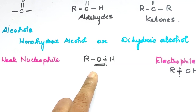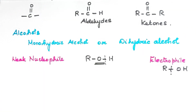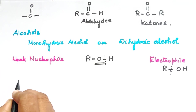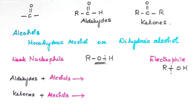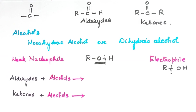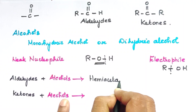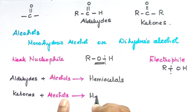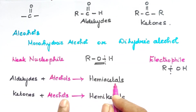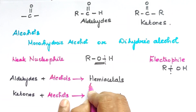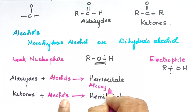So alcohols act as weak nucleophiles. Now when aldehydes and ketones react with alcohols, at the first stage one intermediate compound is formed. When aldehydes and alcohols react, the intermediate compounds formed have a special name — they are called hemiacetals. When ketones react, the intermediates are called hemiketals.